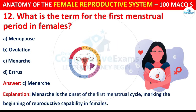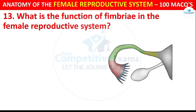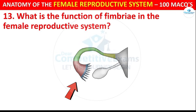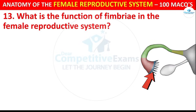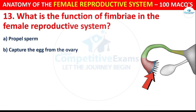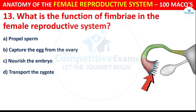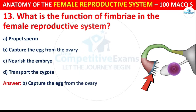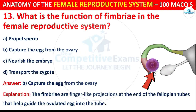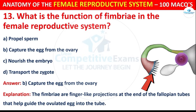Question number 13: What is the function of fimbriae in the female reproductive system? Options are: Propel sperm, Capture the egg from the ovary, Nourish the embryo, or Transport the zygote. The correct answer is B, i.e. capture the egg from the ovary. The fimbriae are finger-like projections at the end of the fallopian tubes that help guide the ovulated egg into the tube.